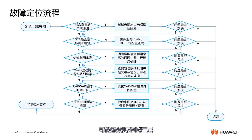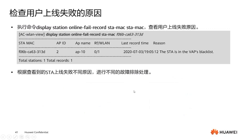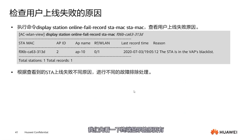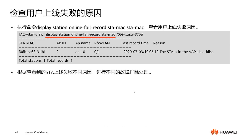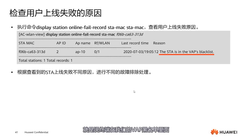Now let's discuss some possible reasons for terminal online failure. Use 'Display Station Online Fail Record' to check the reasons for terminal failure. On the MAC address side, there will be a reason such as 'the STA is in the VAP's blacklist,' meaning the terminal is in our VAP blacklist. Find the blacklist and display the pipeline service to locate the configured MAC address, then just remove it.